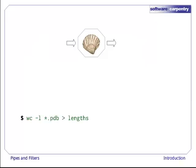For example, if we run wc -l *.pdb > lengths, the shell starts by telling the computer to create a new process to run the wc program. Since we've provided some file names as arguments, wc reads from them instead of from standard input.